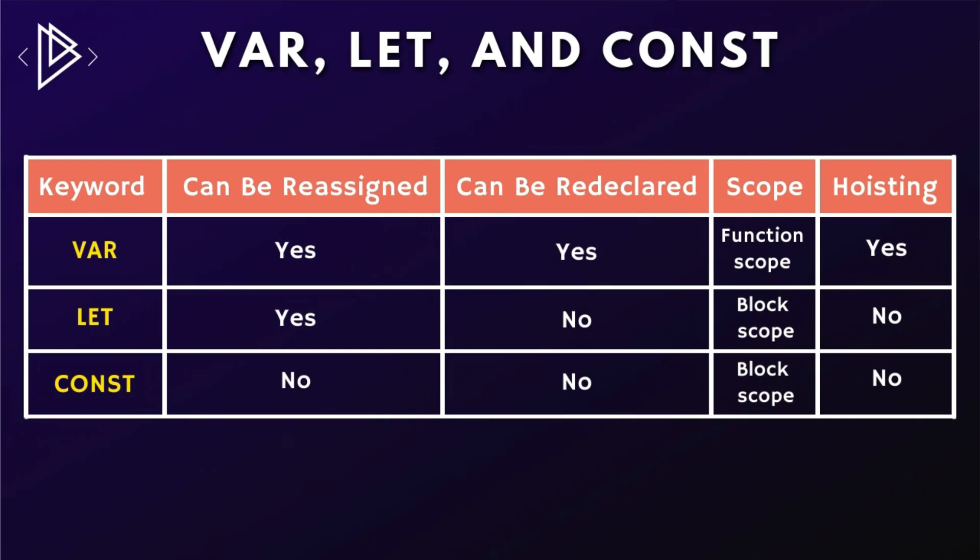In this table we can see that there are four main differences between var, let and const. We'll be covering these in detail over the next few lessons. Bear in mind that what we'll learn — especially in relation to scope and hoisting — is very important when it comes to functions. In this lesson we'll cover the first two columns: can be reassigned and can be redeclared, and then in the next couple of lessons we'll look at scope and hoisting in detail.